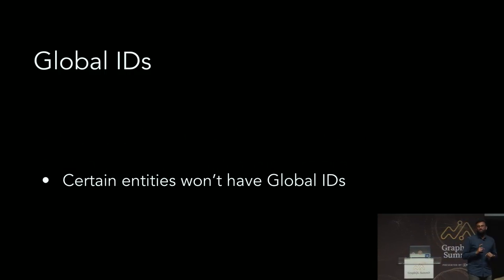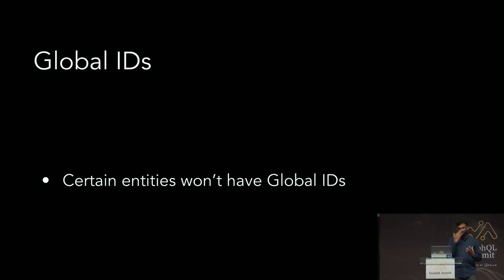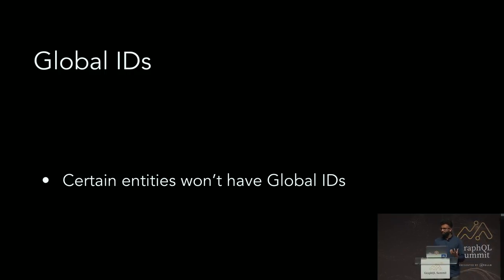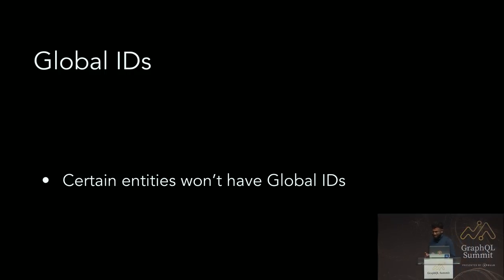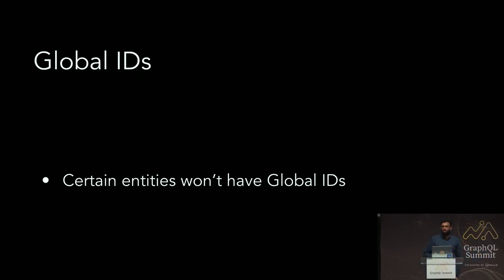We also came to the decision that certain entities in our API will not have global identifiers. That may seem strange because we went into the effort of doing many things Relay talks about, and it turned out great for us. But we have certain requirements we are not willing to go beyond — for example, if you are a merchant, there is no business reason to even think about accessing somebody else's data. So there are entities in our system that do not conform to global IDs, which you could say makes us non-compliant with Relay.